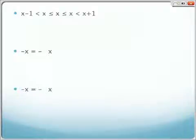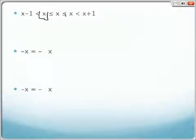From those properties, we can conclude that x minus 1 is less than the floor function of x, which is less than or equal to x, and the ceiling function is greater than or equal to x and x plus 1 is greater than the ceiling function of x.